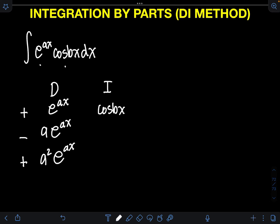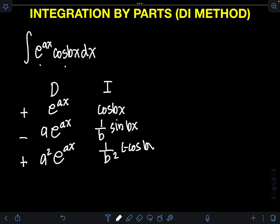For the integral of cosine bx, applying U-substitution with u equal to bx, du equals b dx, so we divide both sides by b. Therefore we get 1 over b times the integral of cosine, which is positive sine bx. Integrating again, this 1 over b sine bx gives us another 1 over b for the U-substitution of bx, so that becomes 1 over b squared. The integral of sine is negative cosine, giving negative 1 over b squared cosine bx.